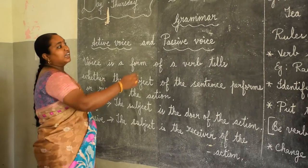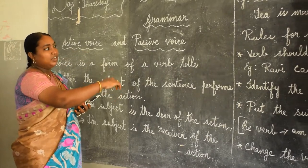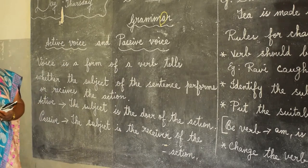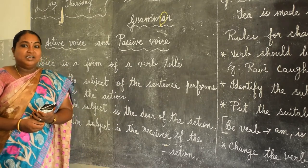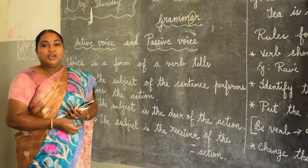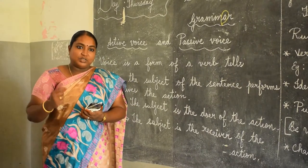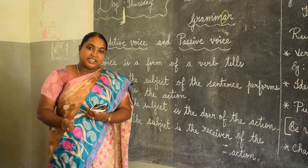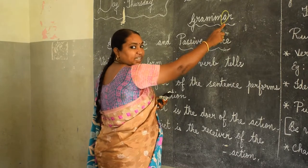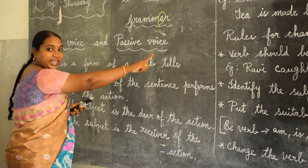Today we are going to see grammar. In the spelling of grammar itself, you are making a mistake. So many of them are writing G-R-A-M-E-R. It is wrong. Grammar is G-R-A-M-M-A-R. Why should we learn grammar? To write in a correct manner, to learn and write the language correctly. The grammar spelling itself, we should not make this mistake.